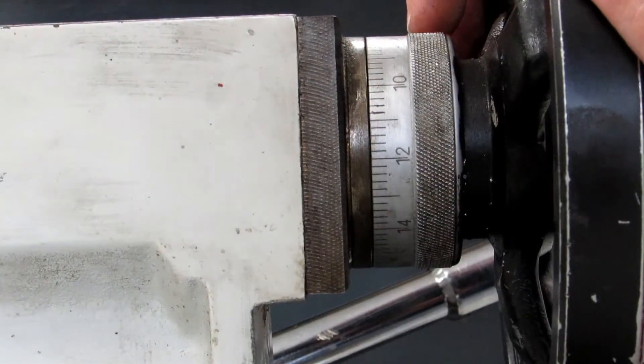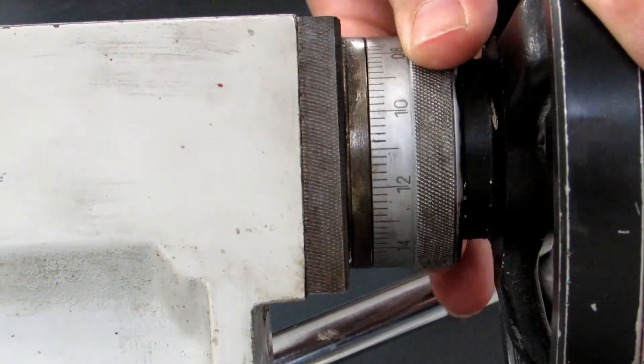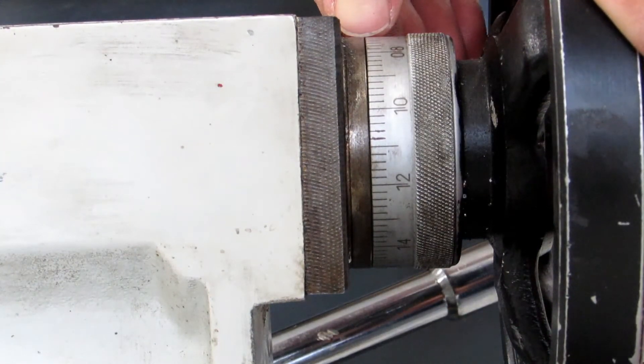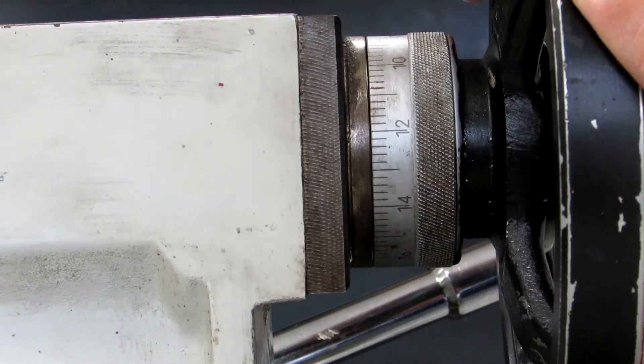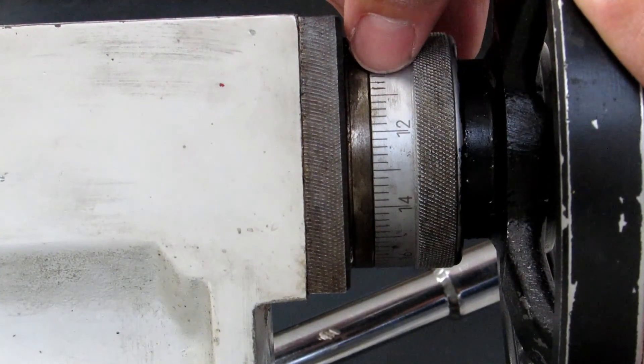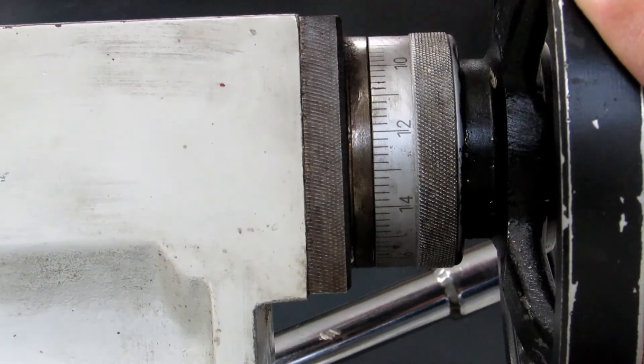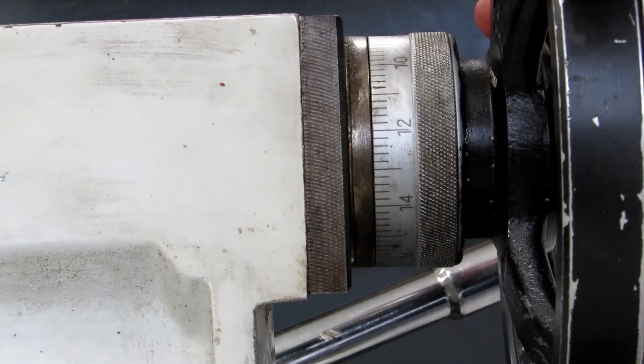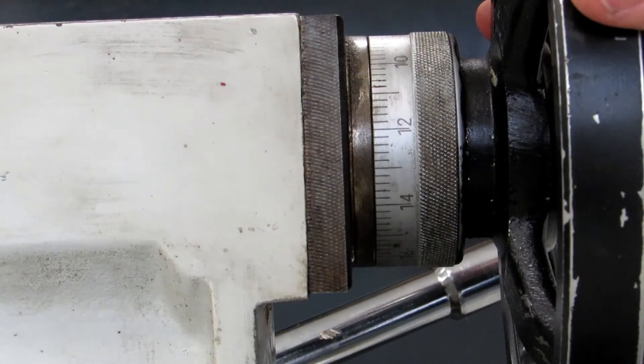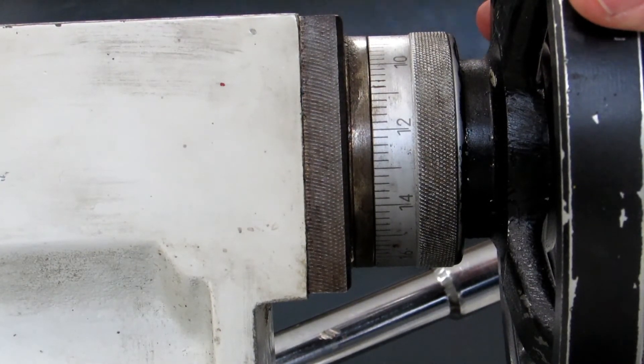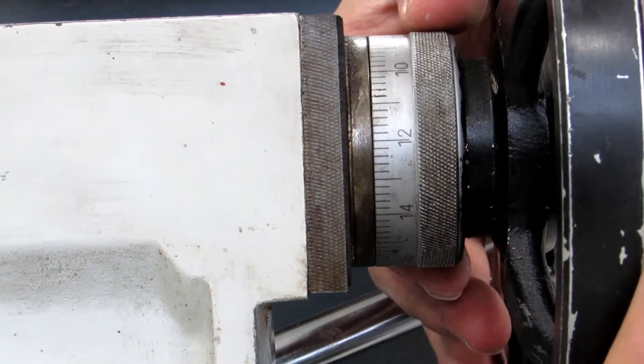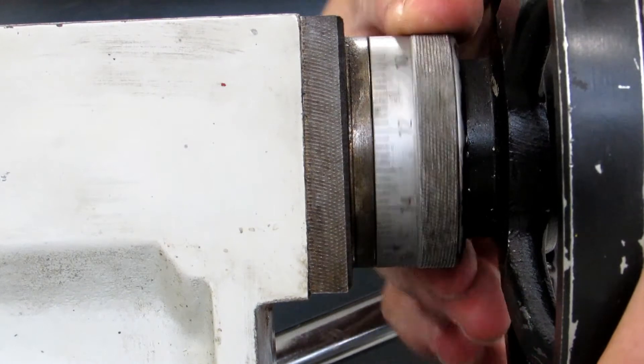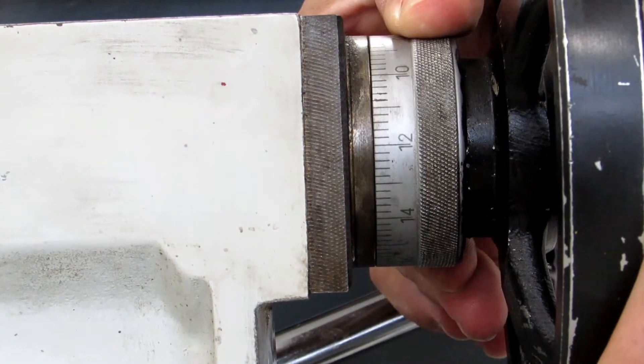The tailstock quill has a dial that you can zero in any position. The witness mark for it is up here on top. Each mark on the dial reads two thousandths of an inch, so you have two, four, six, eight, ten. That can cause some confusion if someone's trying to drill to a certain depth. If they think that it's one-thousandth per mark, they end up drilling twice as deep as they need to. So just be aware of that. And it's just like any of the other dials on the machine. You can hold the handle steady and zero it in any spot.